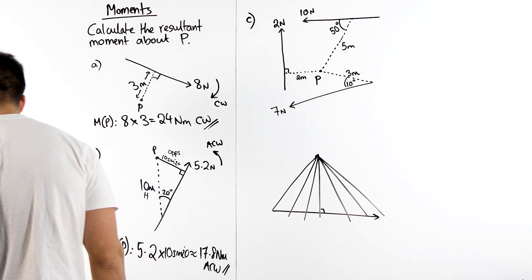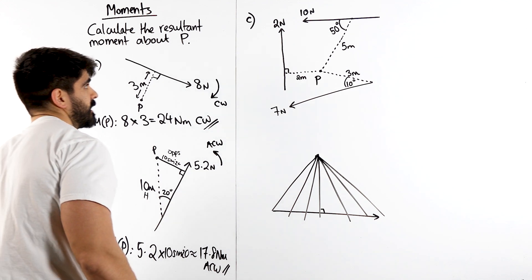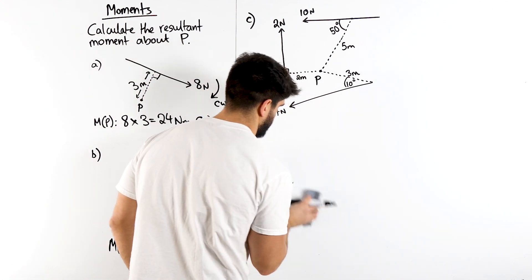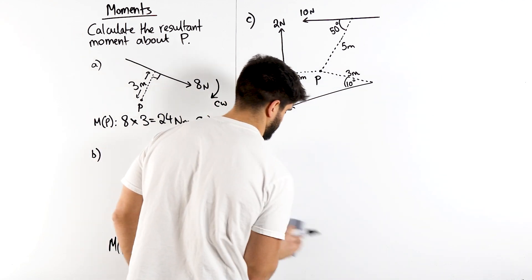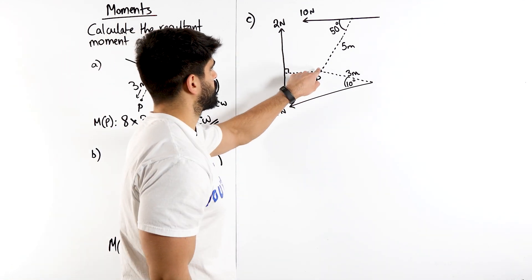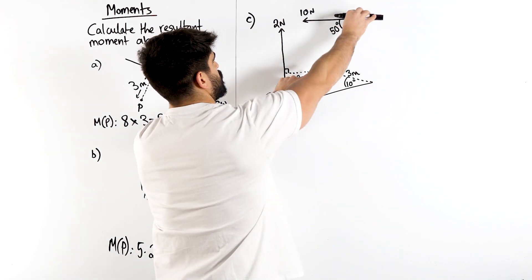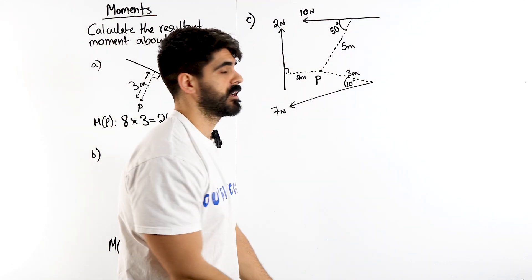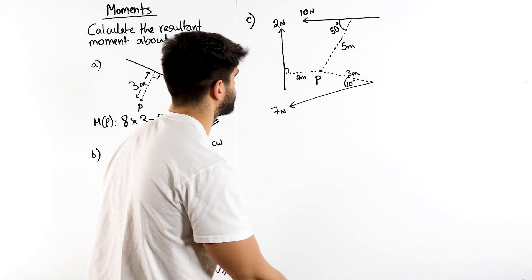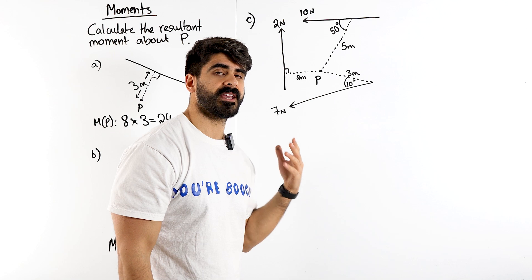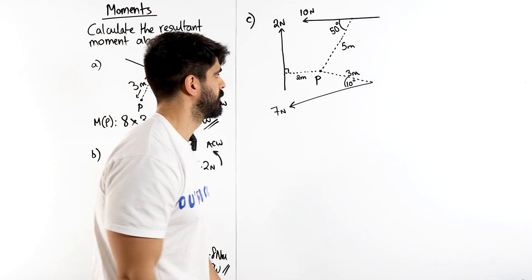Now, what happens when I have this kind of spider-like diagram where I have more forces acting on our piece of paper? We have us who are putting our finger on p. We have someone who's pushing this way. Someone's pushing up. Someone's pushing down this way. Which way is it going to move? All we do is we go force by force and we decide is it a clockwise or anti-clockwise moment?